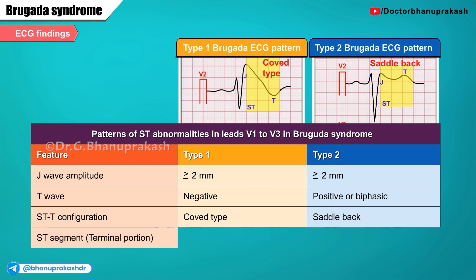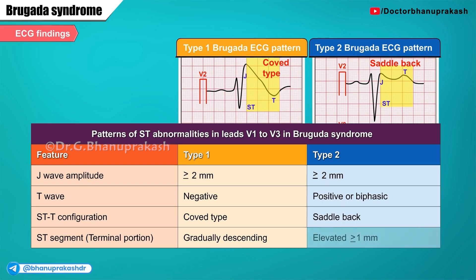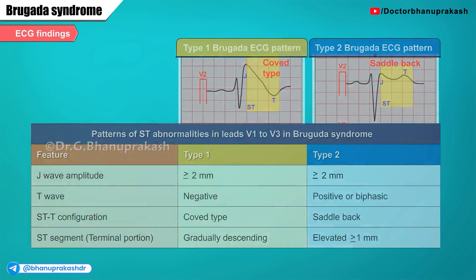The terminal portion of the ST segment gradually descends in type 1, whereas the terminal portion of the ST segment is slightly elevated to at least about 1 mm or more, as seen with type 2 Brugada syndrome.